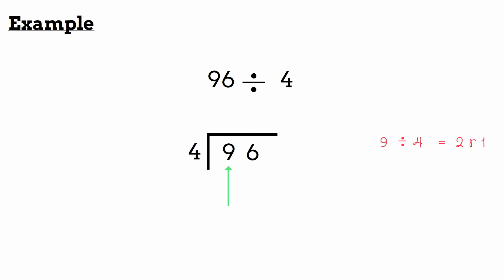It's 2 times remainder 1. So we'll put 2 on top of our bus stop and remainder 1 next to 6. Now we're left with 16. How many times does 4 go into 16? 4 times. So we'll put 4 on top of our bus stop.